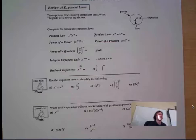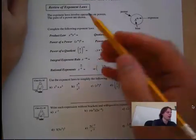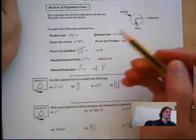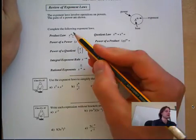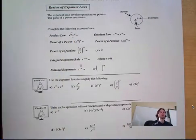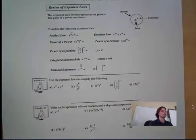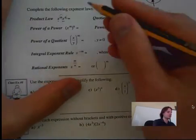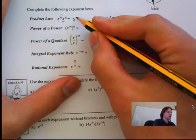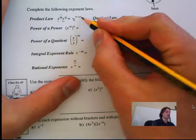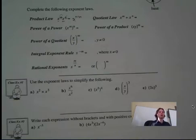Here's a quick review of exponents. Product law: if we have two numbers with the same base and different exponents, all we have to do is add the exponents together — that's x to the n plus m. We add the exponents together. That's our product law.